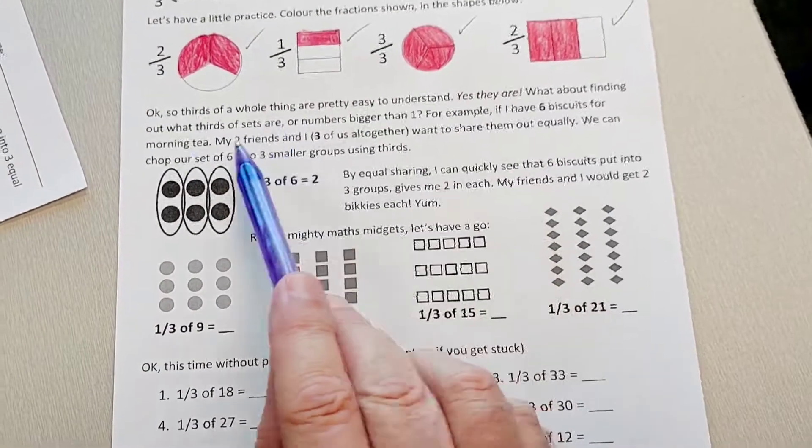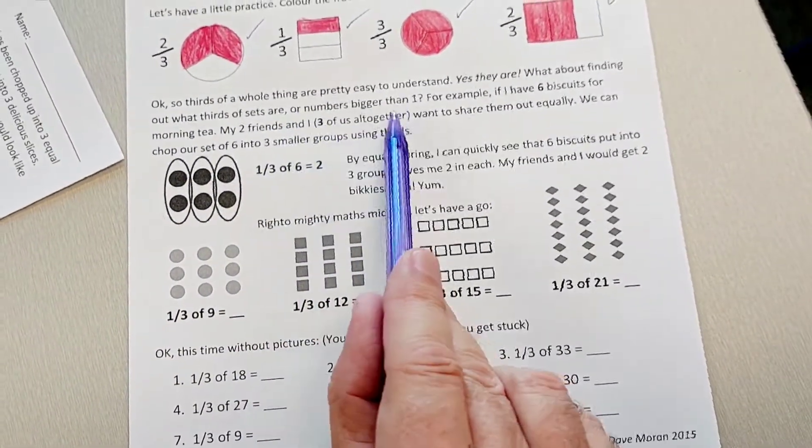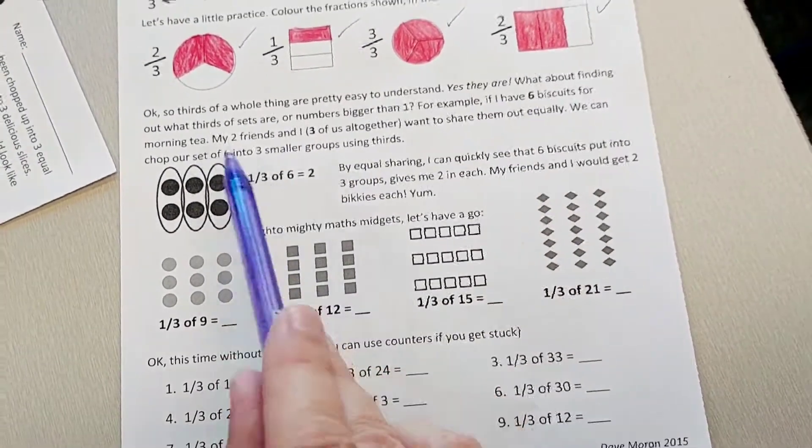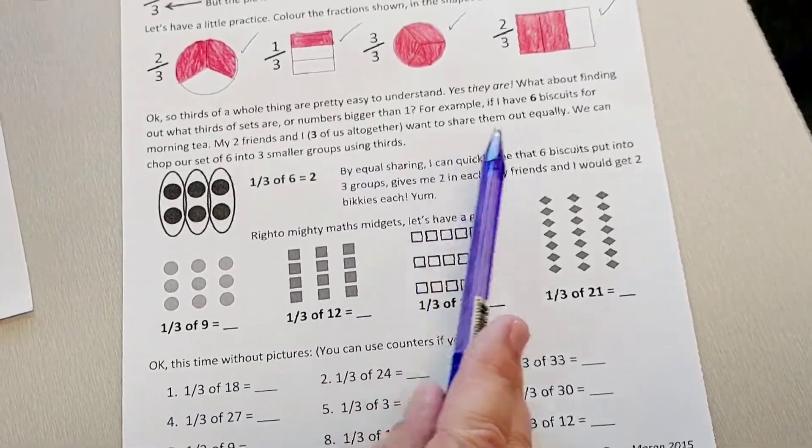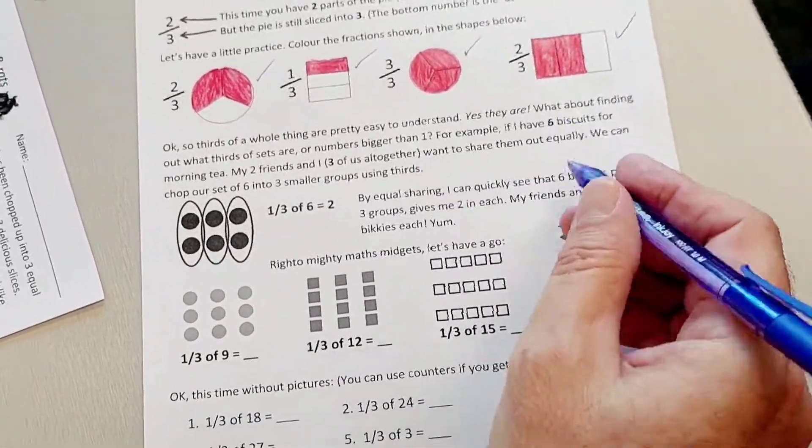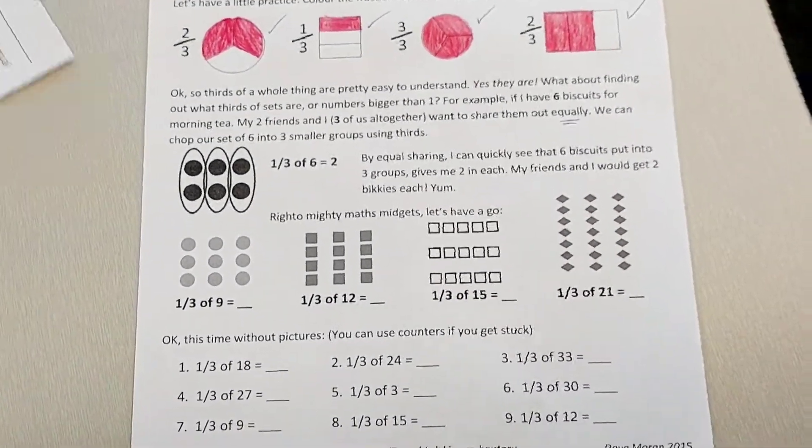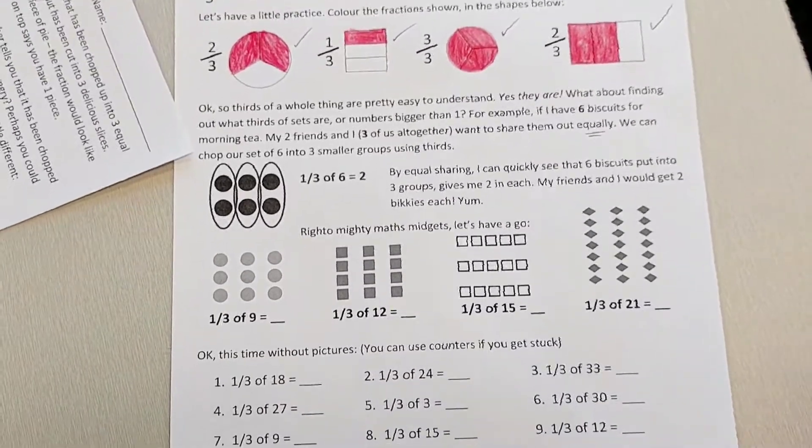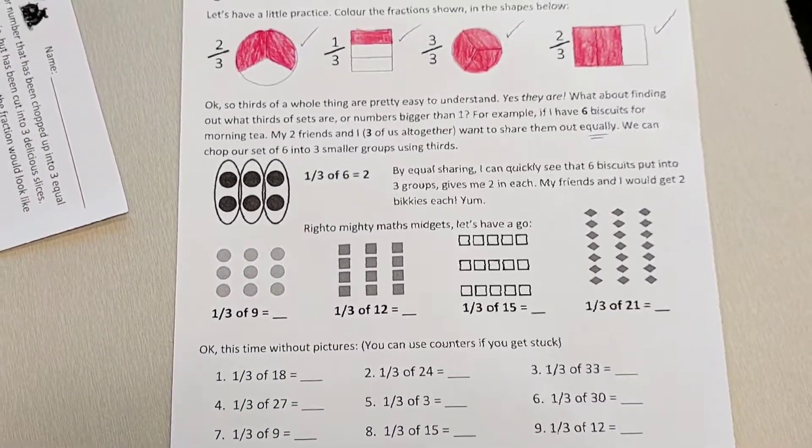But what about finding thirds of sets or numbers bigger than one? For example, if I had six biscuits for morning tea, my friend and I, three of us all together, want to share them out equally. Now that's a key word - it has to be the same. We share them out so they'll get the same amount each.